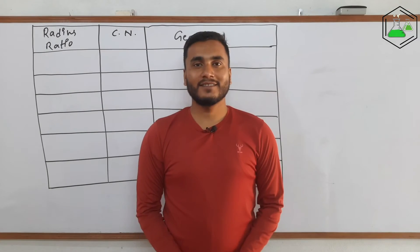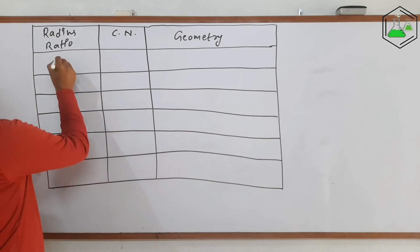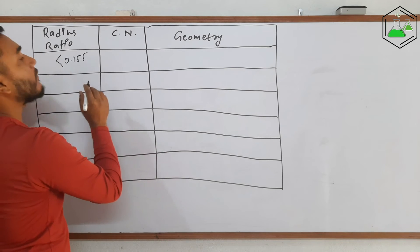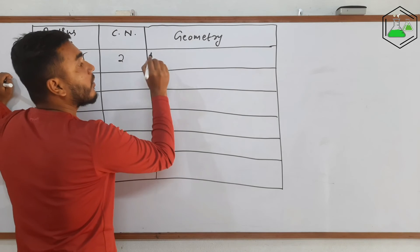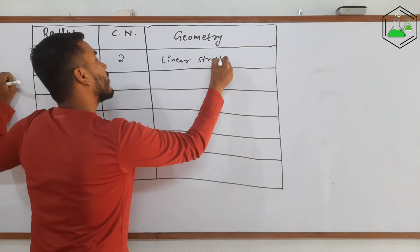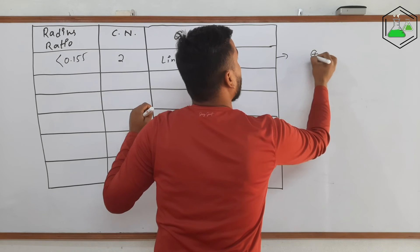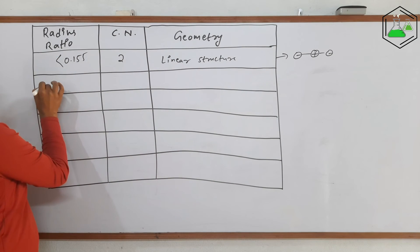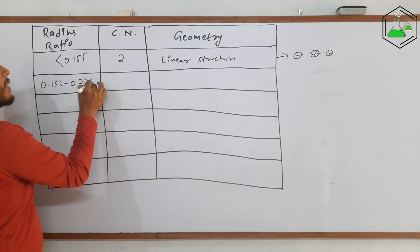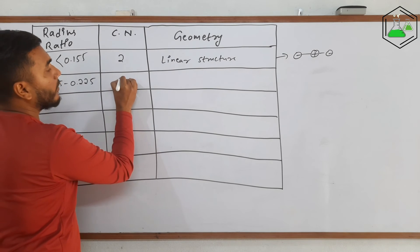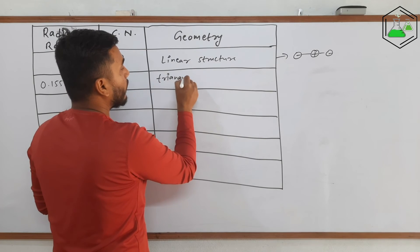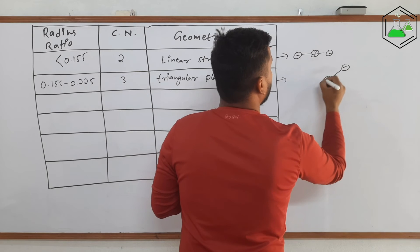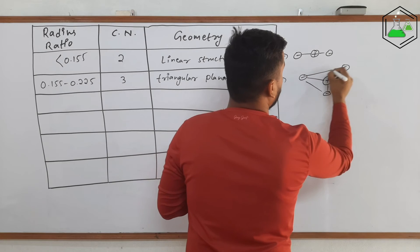If the radius ratio value is less than 0.155, the coordination number will be 2 and the structure will be linear — the cation is in the center with one anion on each side. If the radius ratio value is between 0.155 and 0.225, the coordination number will be 3 and the structure will be triangular planar — a positive charge in the center with three negative charges around it, all touching each other.